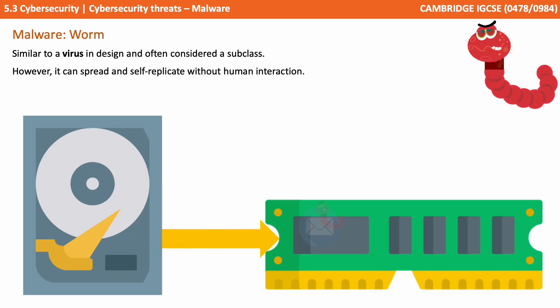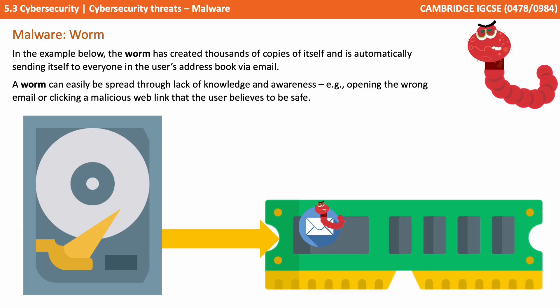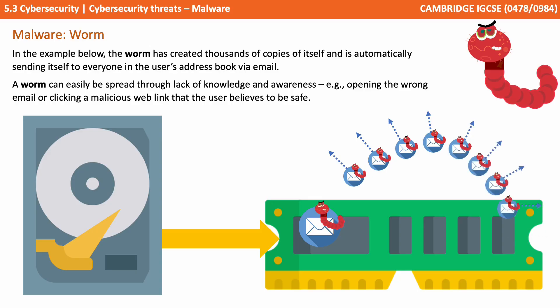A worm is similar to a virus in design and is often considered a subclass. However, it can spread and self-replicate without human interaction. In the example below, the worm has created thousands of copies of itself and is automatically sending itself to everyone in the user's address book via email. A worm can easily be spread through lack of knowledge and awareness — for example, opening the wrong email or clicking a malicious web link that you believe to be safe.